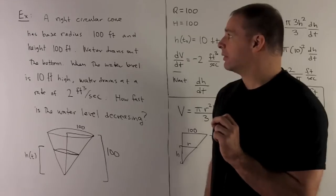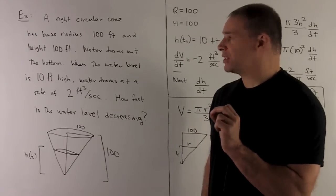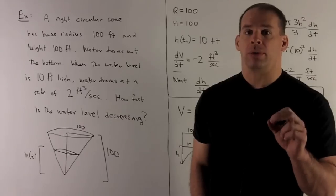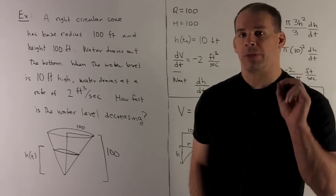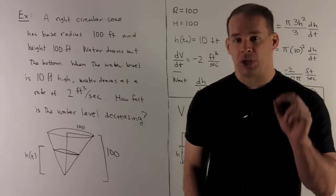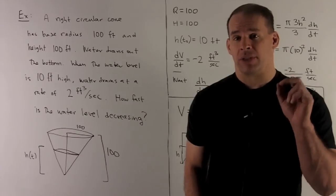Now, what do we have? So we're going to have a fixed base radius, fixed height for the big cone. That's not going to change. Both of those are going to be 100 feet. Where all the change is going to occur is going to be for the cone that's on the inside.